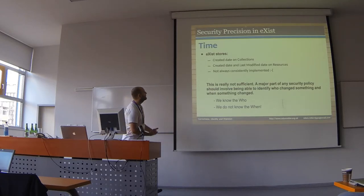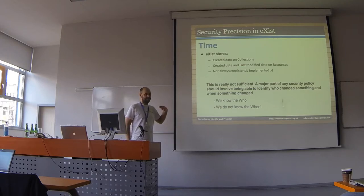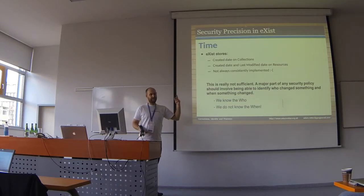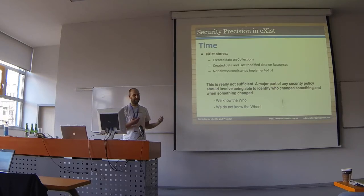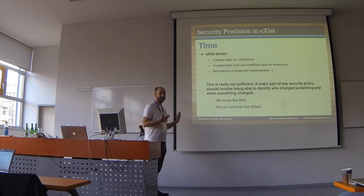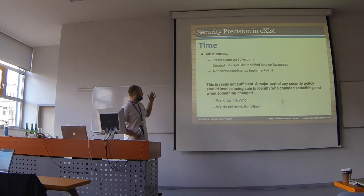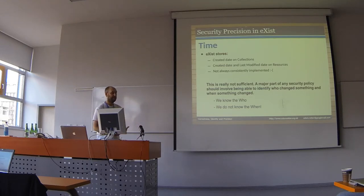For collections, we only have created date — I don't really know when my collection has changed or something happened with it. Resources have created date and last-modified, but is that last-modified when it was copied, when permissions were changed, or when the content changed? It turns out it varies. We know who did something — we're storing ACLs, users, and groups, so we know who did it — but we don't know when they did it, which is a bit haphazard.